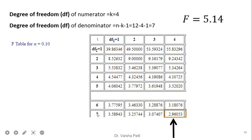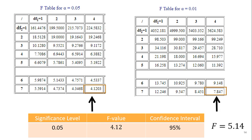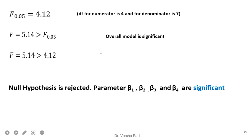For the F-table at numerator 4 and denominator 7, the intersection at 0.10 gives 2.96. Since 5.14 is greater, we are satisfied at 90 percent confidence. Checking at 0.05, the table value is 4.12 and 5.14 still satisfies 95 percent confidence. But at 0.01, the table value is 7.84, which is greater than 5.14. So the overall model is significant at 90 and 95 percent confidence but not at 99 percent confidence.